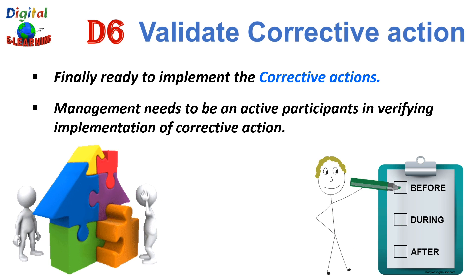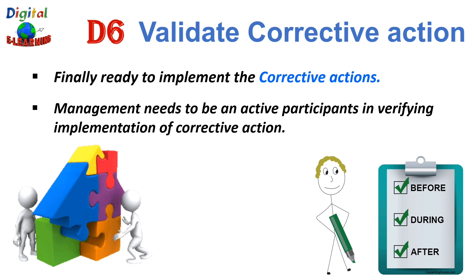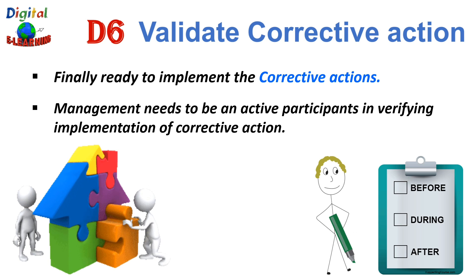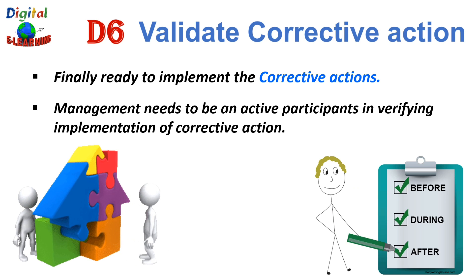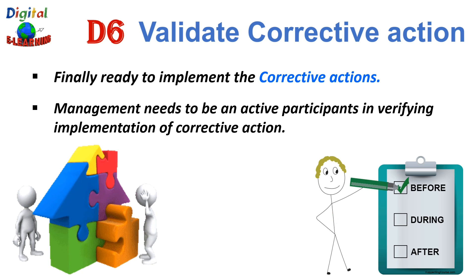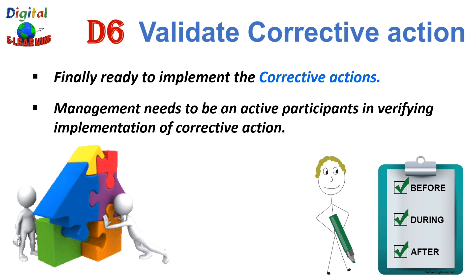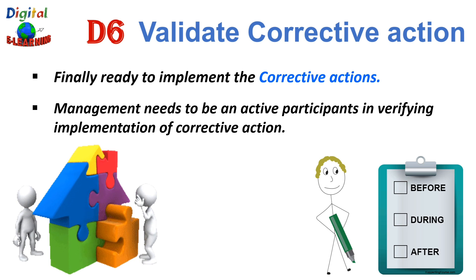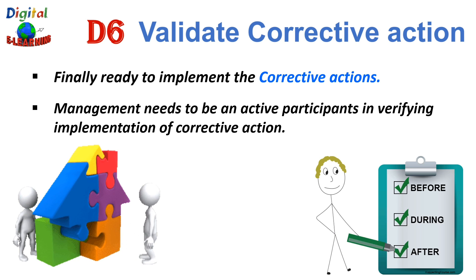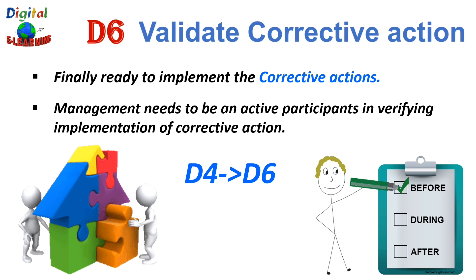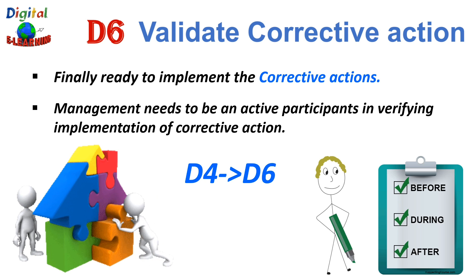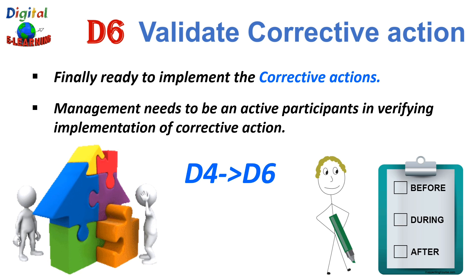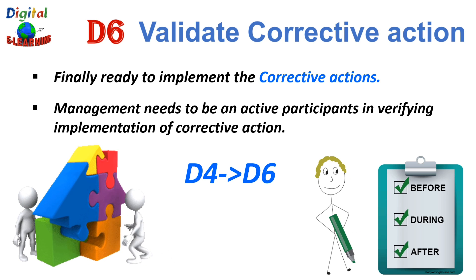Leaders need to set an example by examining the process through the eyes of a customer. Verification could also involve tools like accelerated life testing to simulate conditions that could lead to failure. If the problem has multiple dimensions, you need to perform steps from D4 through D6 until you verify that your corrective actions have addressed the problem as a whole.